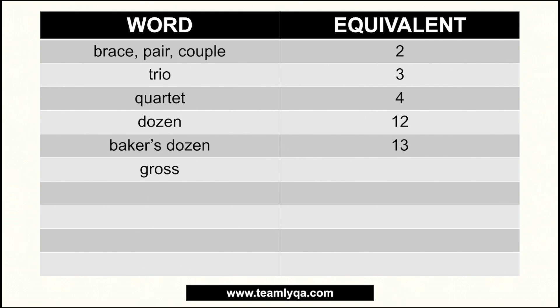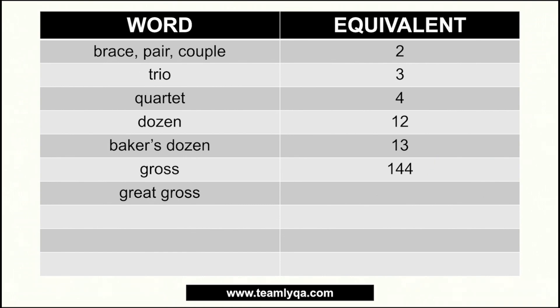Next is 'gross.' Gross in numerical value is actually one hundred forty-four. That one hundred forty-four is made up of twelve dozens — a dozen of dozens, like twelve times twelve. And then what is 'great gross'? Great gross is even more — it's a dozen of a gross, which gives us one thousand seven hundred and twenty-eight.